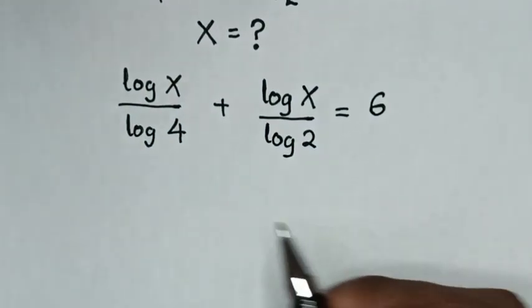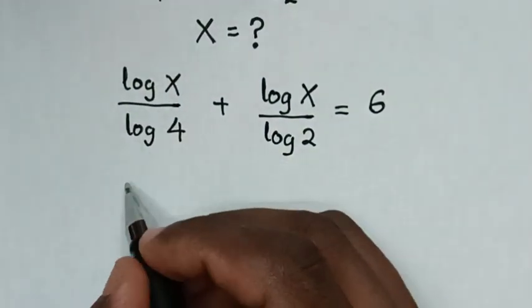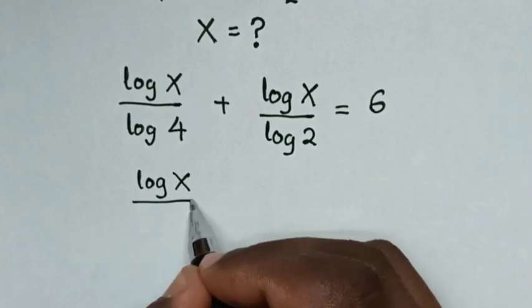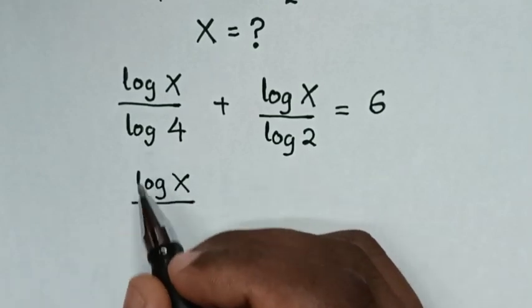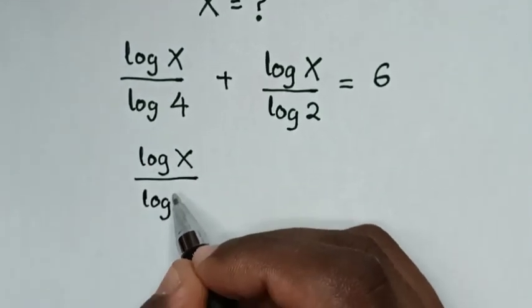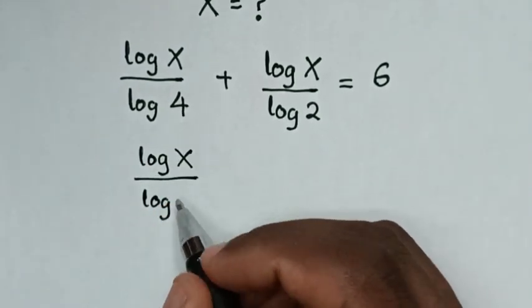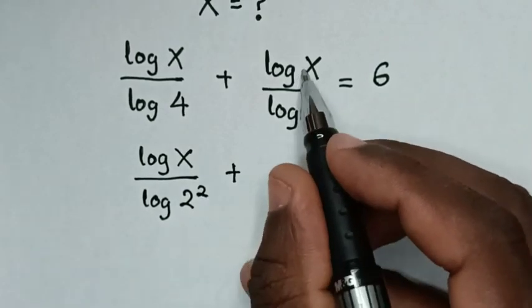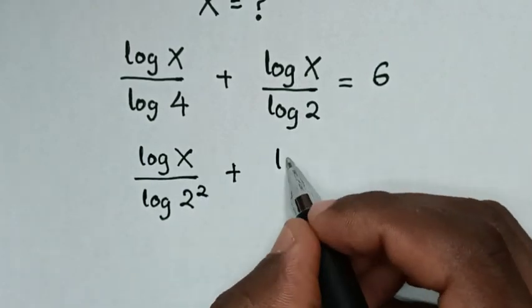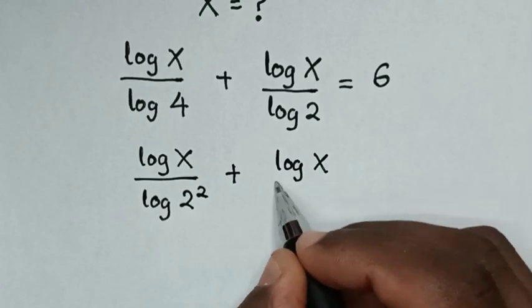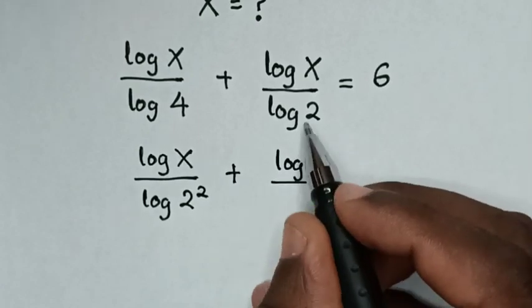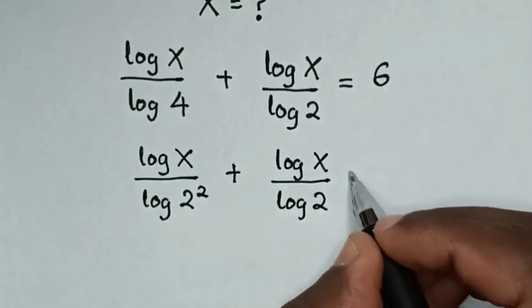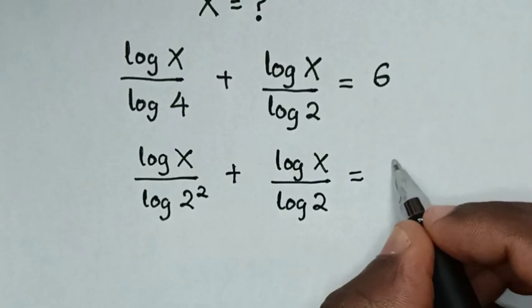In the next step, log of x over log of 4 is the same as log of x over 2 power of 2, then plus log of x over log of 2, then is equal to 6.